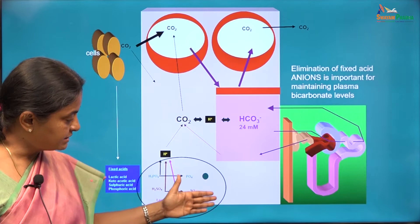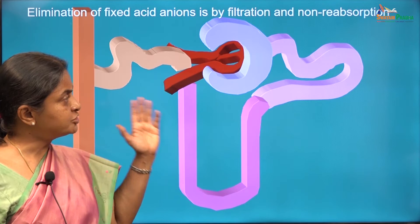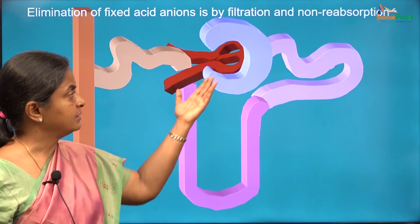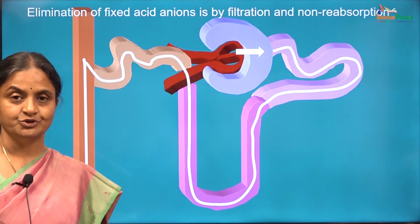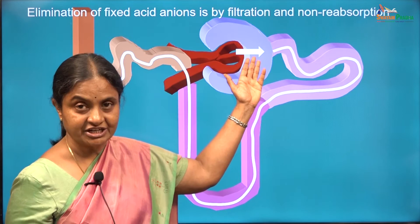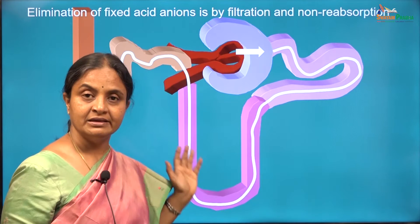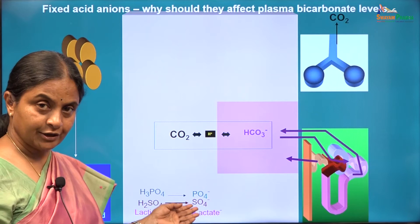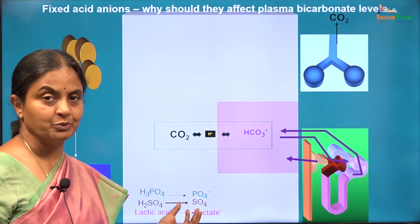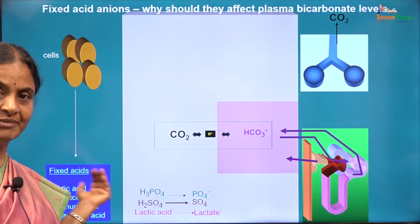Why is elimination of these anions important for maintaining plasma bicarbonate? Elimination of the fixed acid anions per se is easy to understand — they are freely filtered at the glomerulus and are eliminated unreabsorbed. Only if there is renal failure — a failure of enough filtration — will elimination of fixed acid anions be affected. Otherwise, if glomerular filtration rate is adequate, the fixed acid anions will be filtered and eliminated, their levels remaining within normal limits — almost undetectable, less than 1 millimole per litre — provided their formation is also normal.